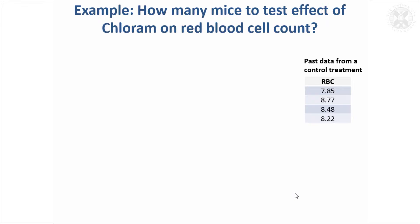So we're going to have mice that have control that don't have the chlorum and another group that do have it. We've got some past data, just four values from a control treatment that gives us a feel for how variable the data are so we can build that into the calculation.